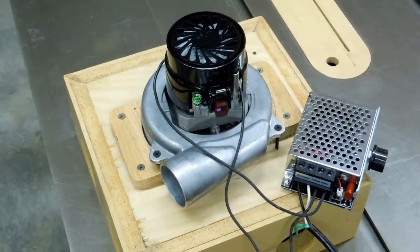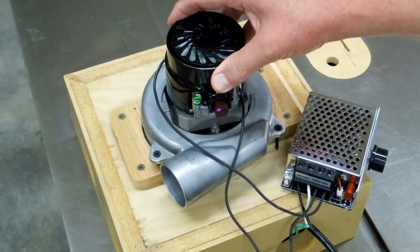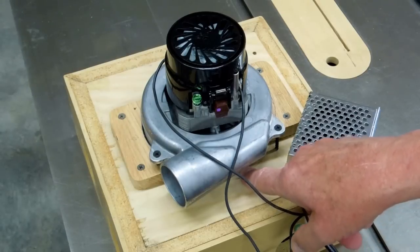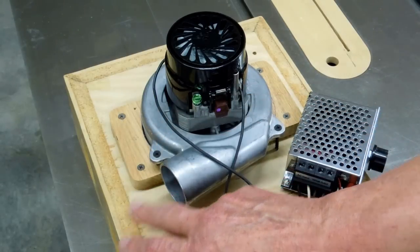This is an Amtec single stage vacuum blower. What I like about this is that the compressor housing is isolated from the motor. The air is taken in on the reverse side of this housing. It's compressed and discharged out through this connection.